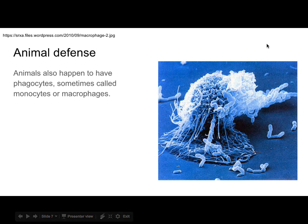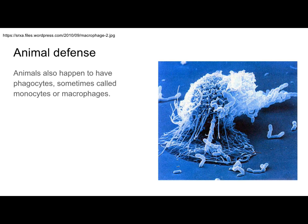Defense number two, when dealing with animals, involves cells called macrophages. These are cells that just go around and eat whatever's in their way. If it's a bad cell, they'll eat it; if it's a good cell, they'll eat it. They don't care — they'll just eat whatever's in their path. That's why it's a defense mechanism: it doesn't care, it will eat whatever is there.